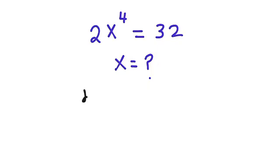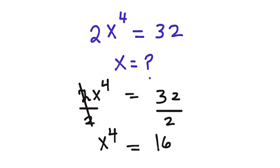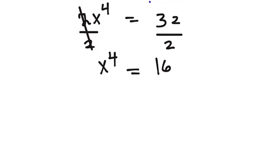Let me rewrite the equation: 2x to the power of 4 equals 32. What I'm going to do is divide both sides by 2. This cancels, and we're going to have x to the power of 4 equals 32 divided by 2, which gives us 16.